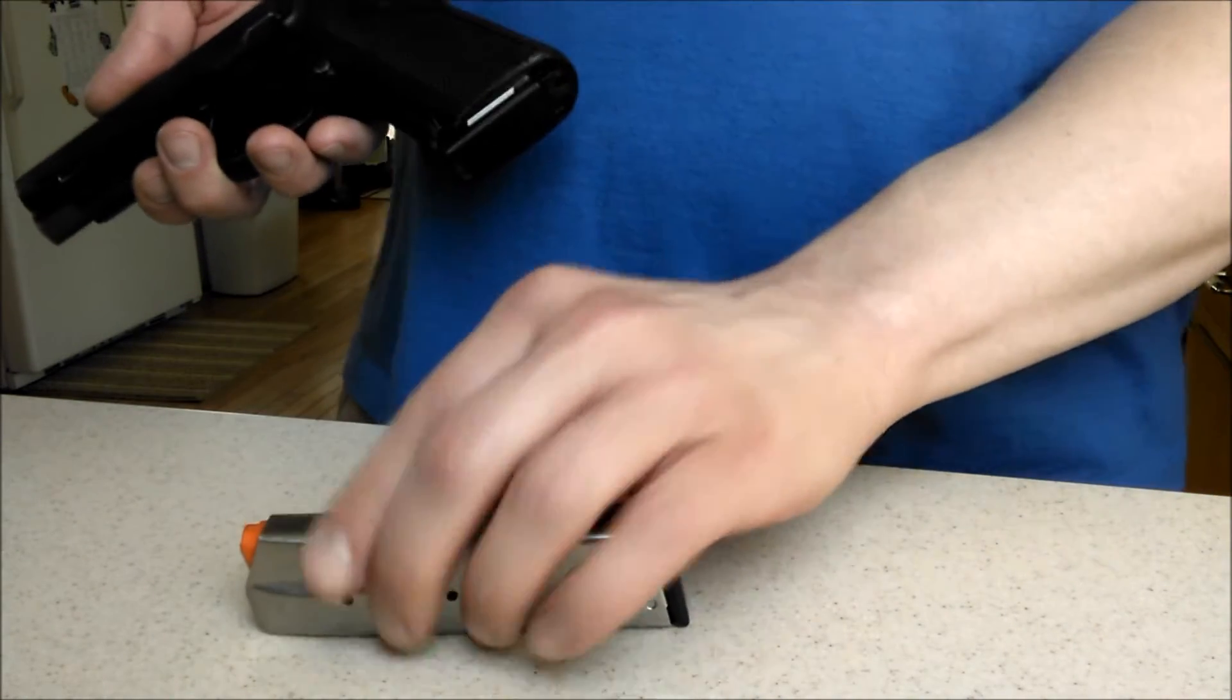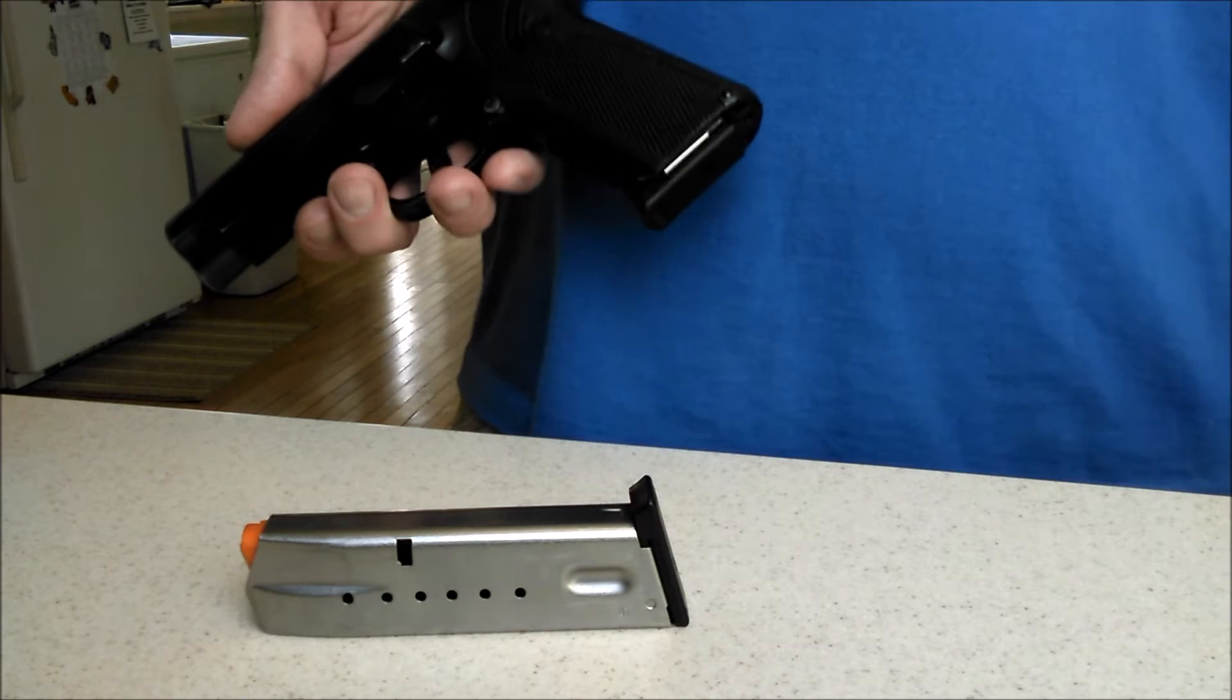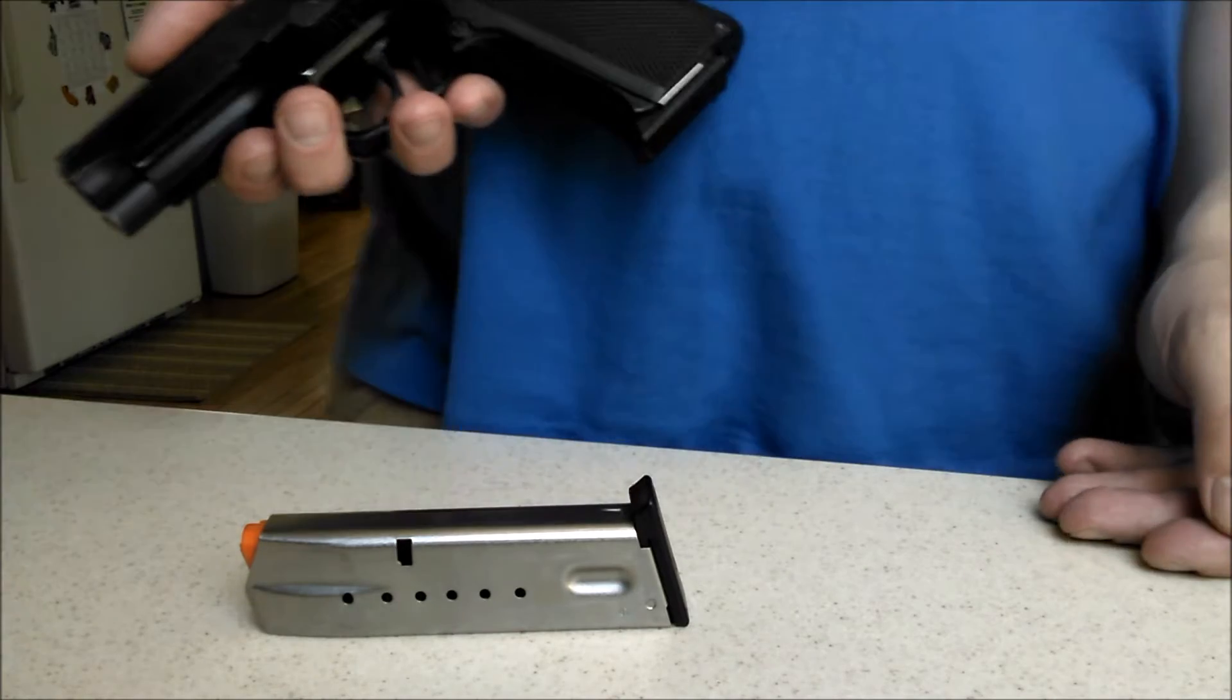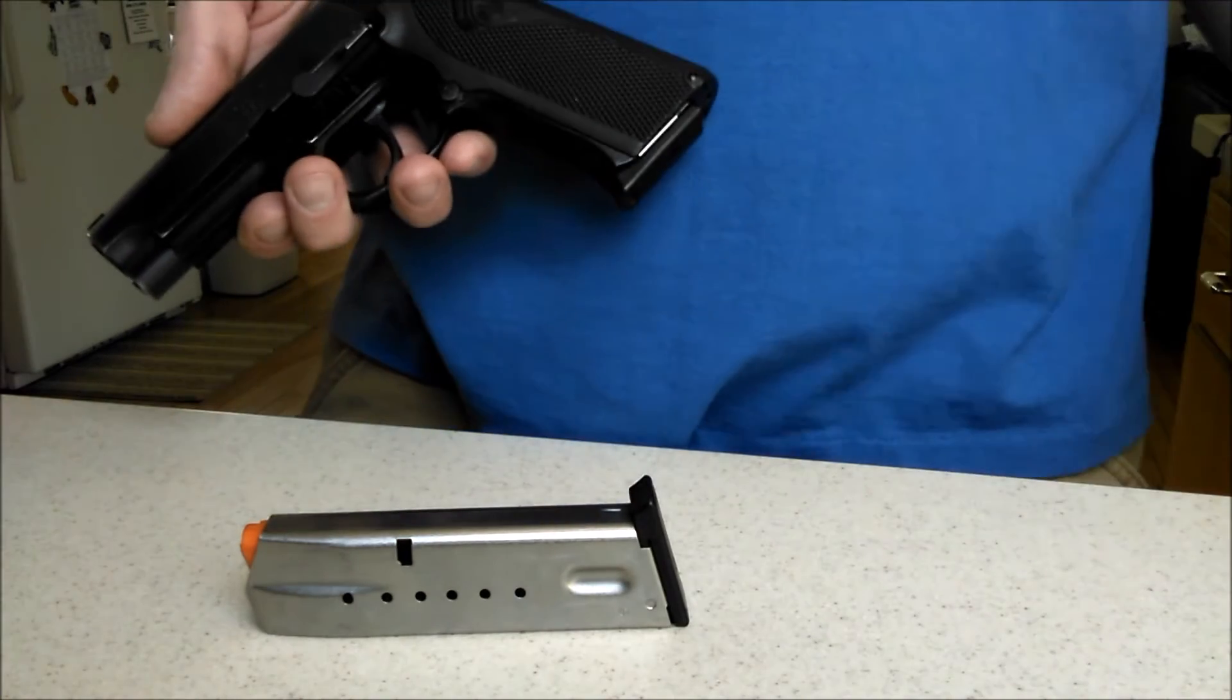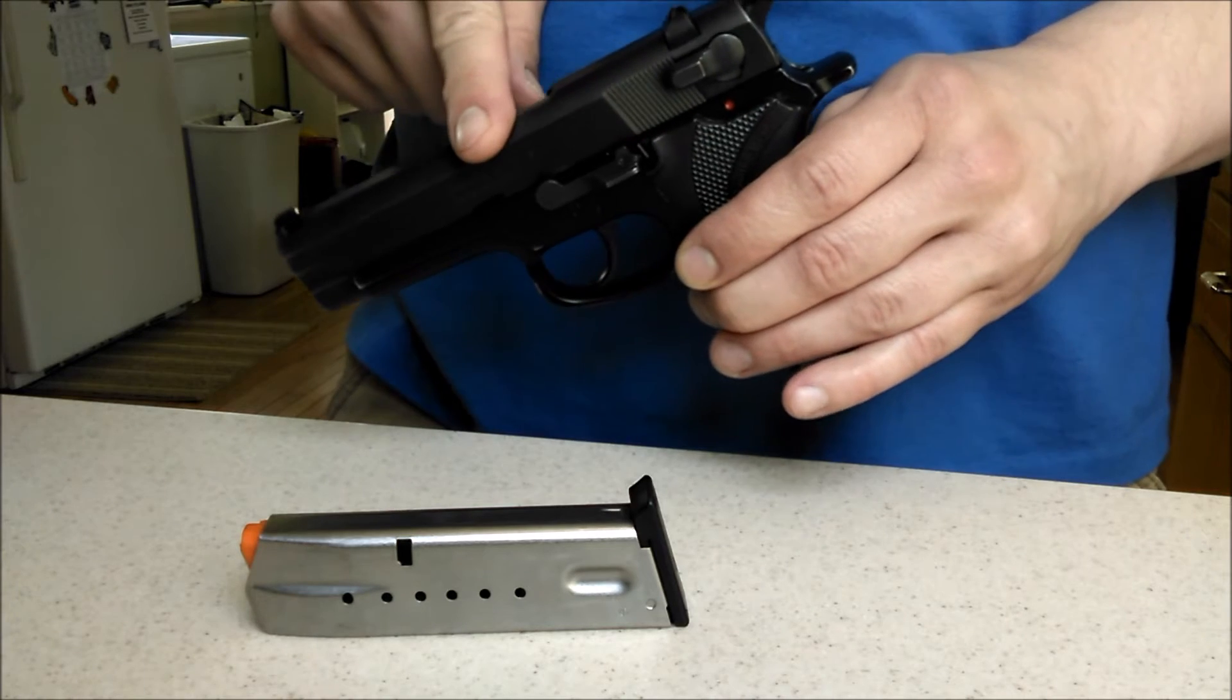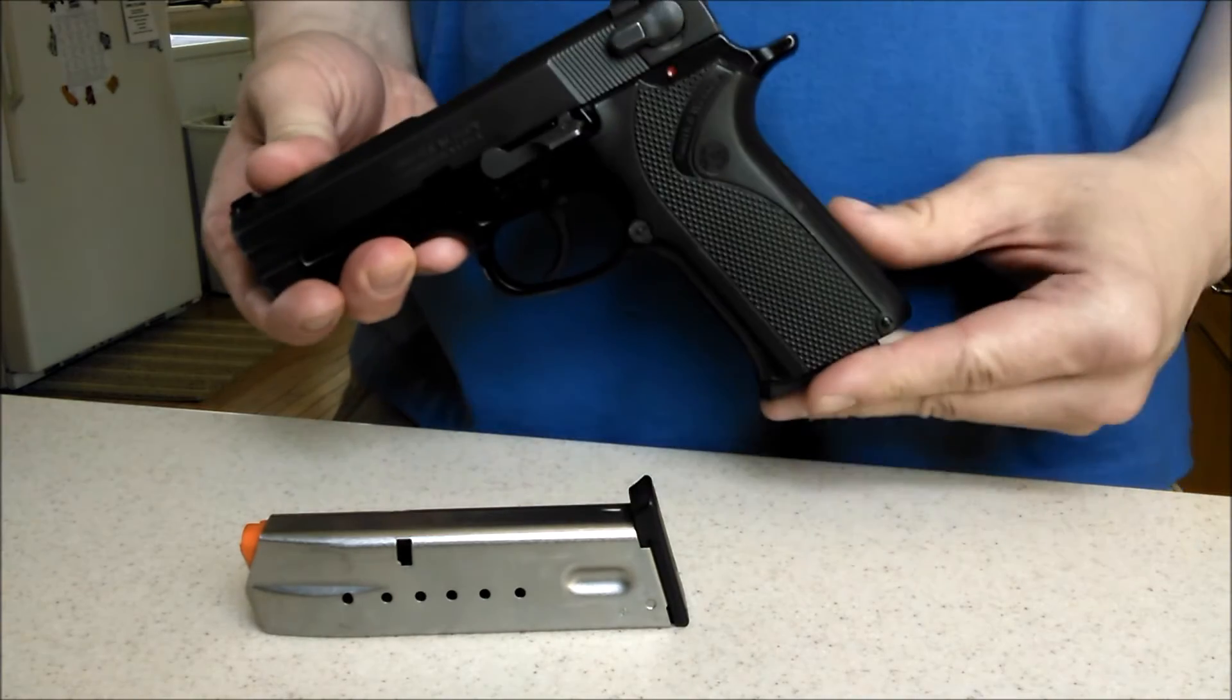Similarly, they came out with the Model 411 about the same time. What that is, is a .40 caliber 11 shot and that came out right about the time the .40 Smith & Wesson came out. I believe that the 411, which is almost identical gun to this, just chambered in .40 Smith & Wesson, was one of the first .40 caliber handguns that there was.